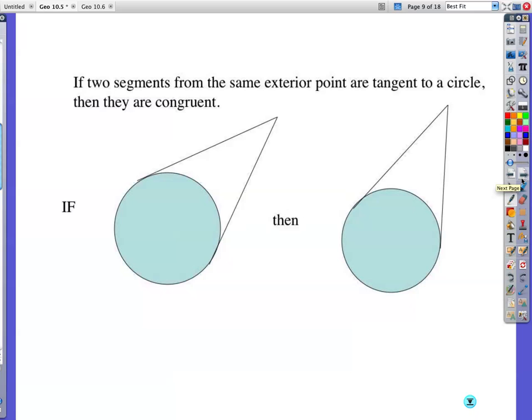If two segments from the same exterior point are tangent to a circle, okay, so here's an exterior point, I've got two segments, this one and this one, and we're saying they're tangent because they're touching, then they are congruent. So then you can say, if you already know that you have this kind of a picture, then you can write, hey, this piece right here is congruent to this piece right here.